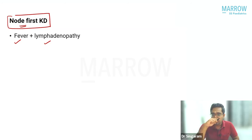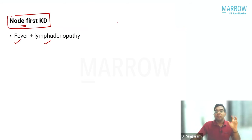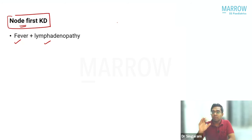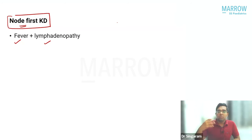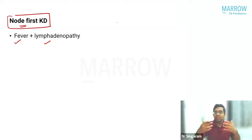An important clinical point: not all manifestations of Kawasaki disease will be present at the time of presentation — they evolve over time. The first day the child may have only fever, then rash appears, then edema, then conjunctivitis and lymphadenopathy. Clinical suspicion is the number one priority — as features accumulate, you can confirm the diagnosis.